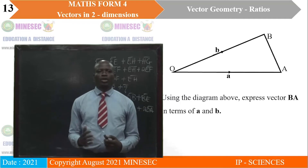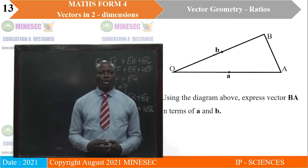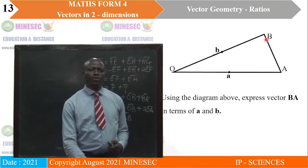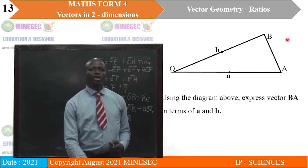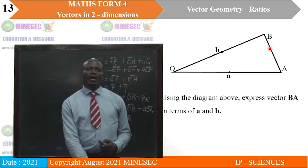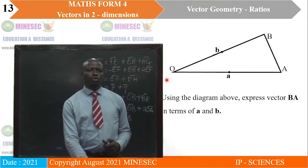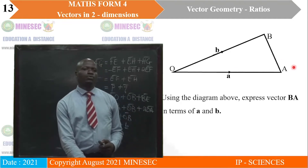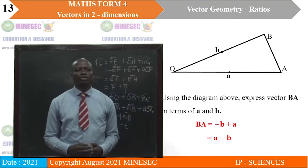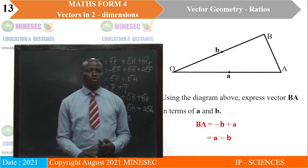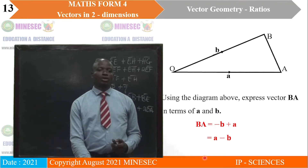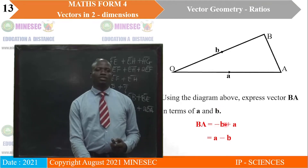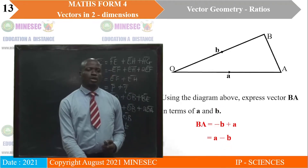Let's look at this short question to refresh our minds. Using the diagram above, express vector BA in terms of vectors a and b. Vector BA means we move from B until we arrive at A. But we cannot pass through the direct path because there is no vector defined for BA directly. So we move from B to O and from O to A. From B to O, we are moving against the arrow, so it becomes negative OB. After that, we move OA. So BA is equal to negative b plus a, which is the same as a minus b.